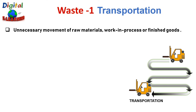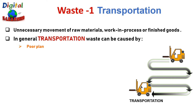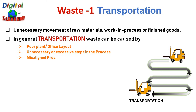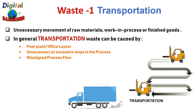In lean manufacturing, movement is very important — from delivery trucks of supplies and products to the movement of machinery and people. Often, transportation may force you to pay additional costs for time, space, and machinery. In general, transportation waste can be caused by poor plant and office layout, unnecessary or excessive steps in the process, misaligned process flow, and poorly designed systems.